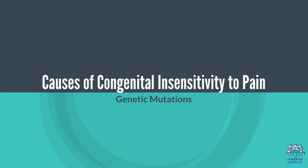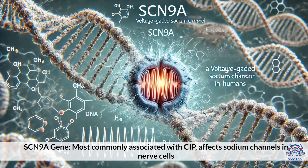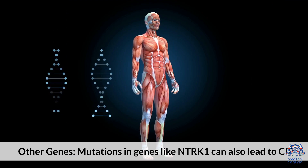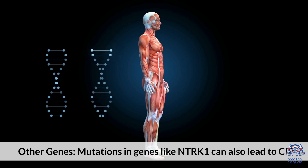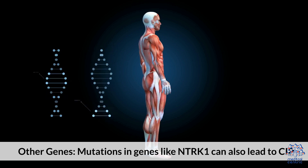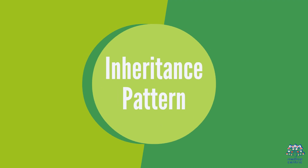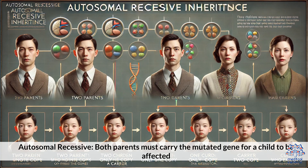Causes of Congenital Insensitivity to Pain — Genetic Mutations. The SCN9A gene is most commonly associated with CIP and affects sodium channels in nerve cells. Mutations in other genes, like NTRK1, can also lead to CIP. The inheritance pattern is autosomal recessive, meaning both parents must carry the mutated gene for a child to be affected.